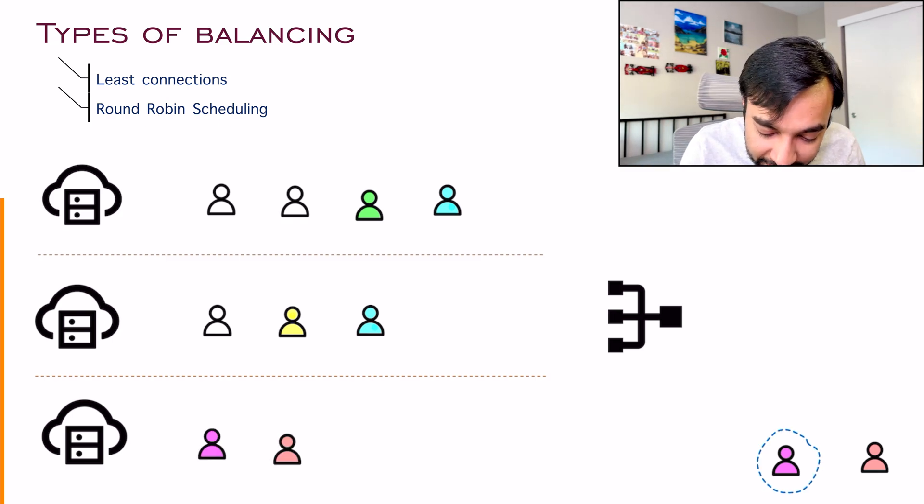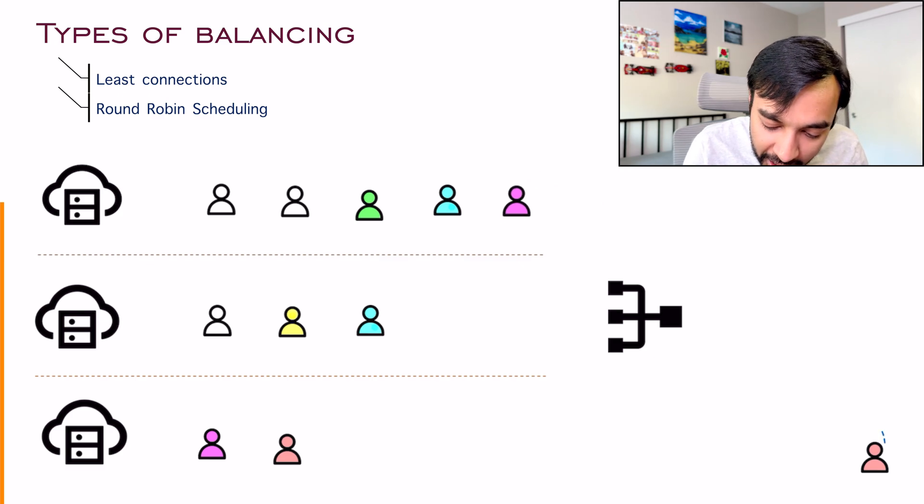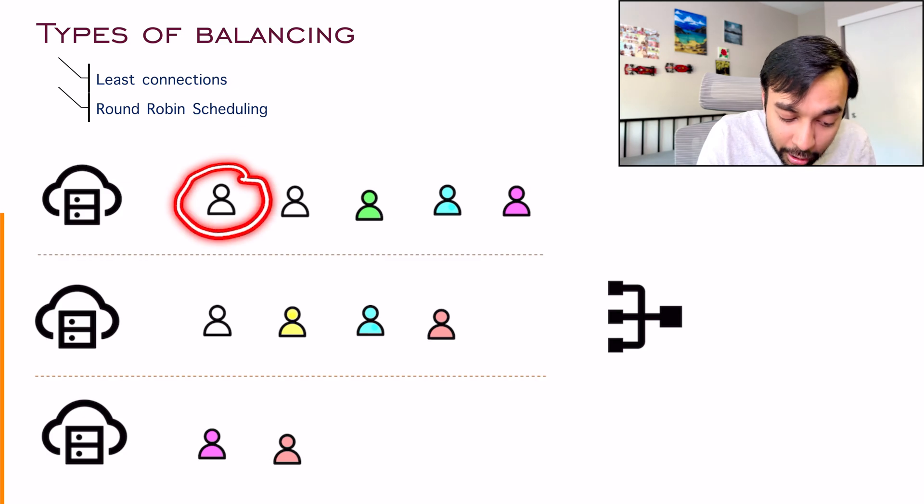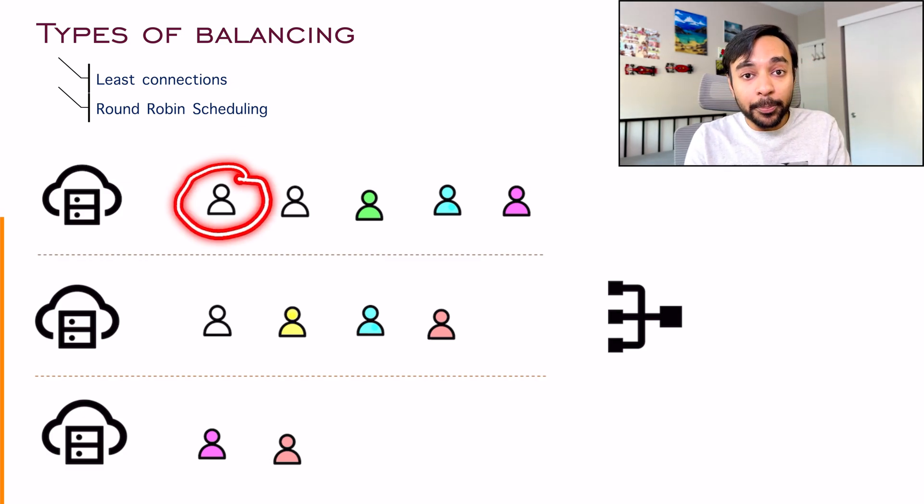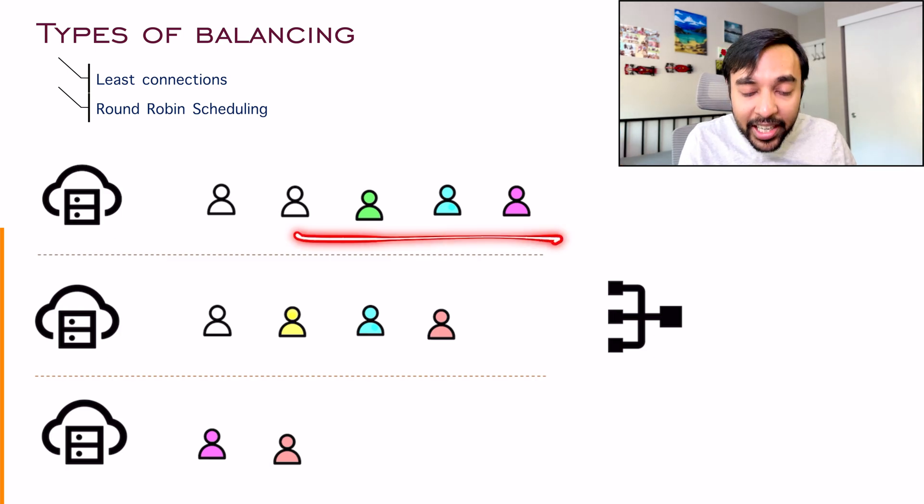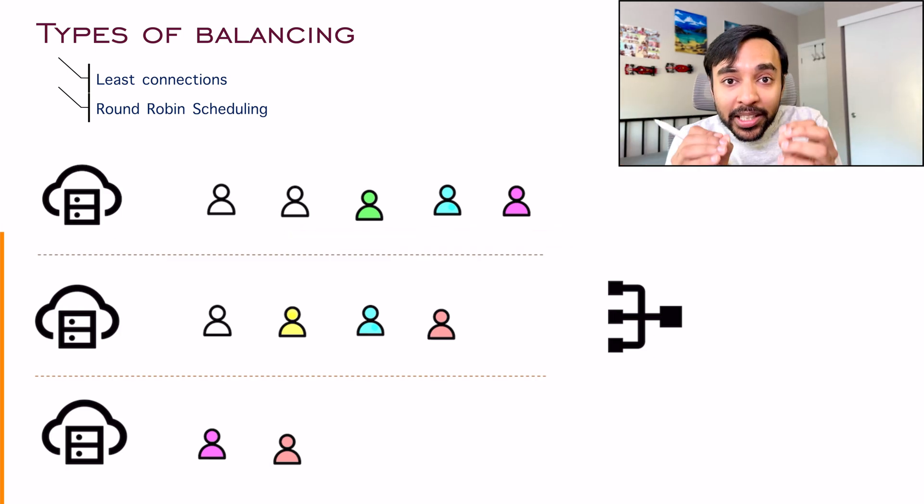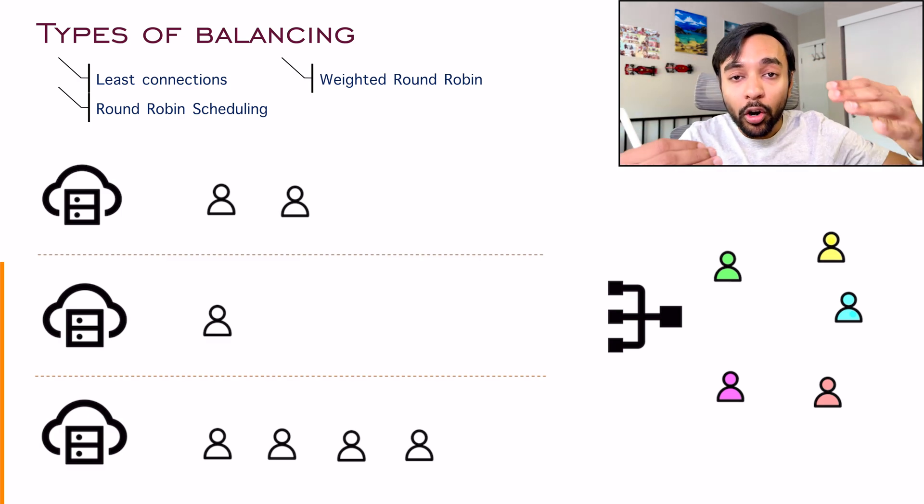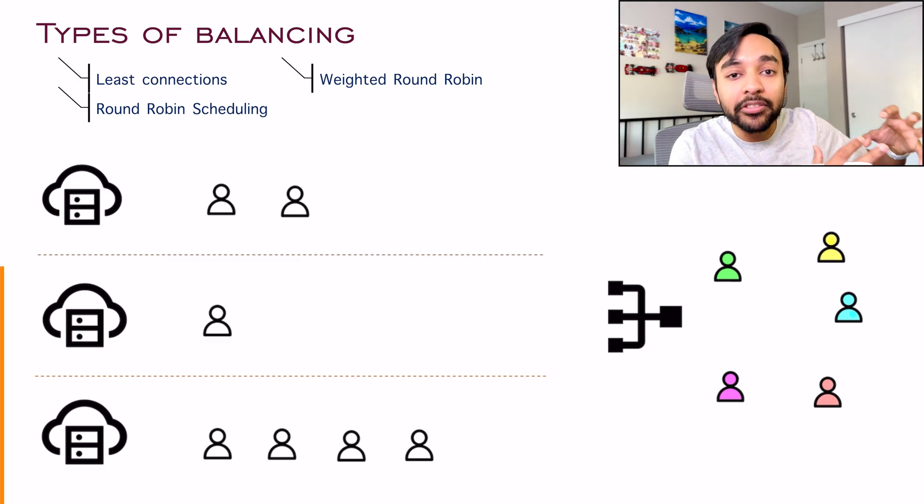According to round robin scheduling method, for the next client, this next client will go to server number one and this next client will go to server number two. It is possible that this particular user is blocking the server. It could be possible that they are downloading a huge movie and all of these clients will get waiting. So sometimes the round robin scheduling method is not desirable. And to address that issue, what we do is we can also do a weighted round robin scheduling.